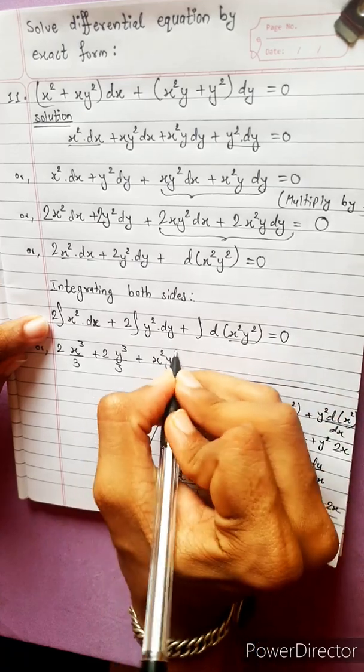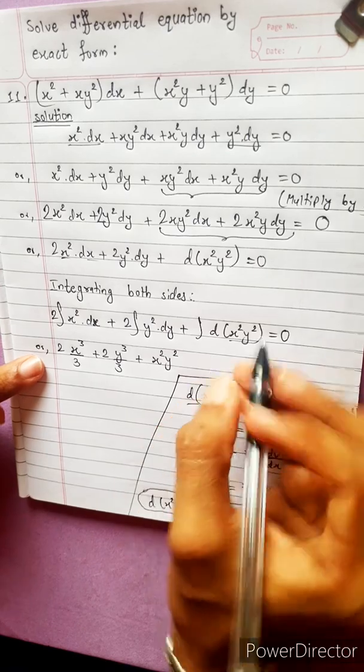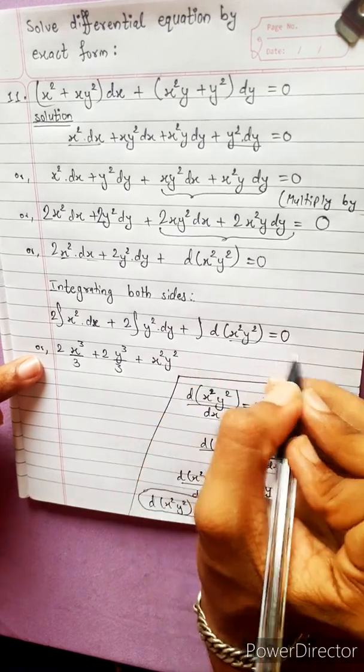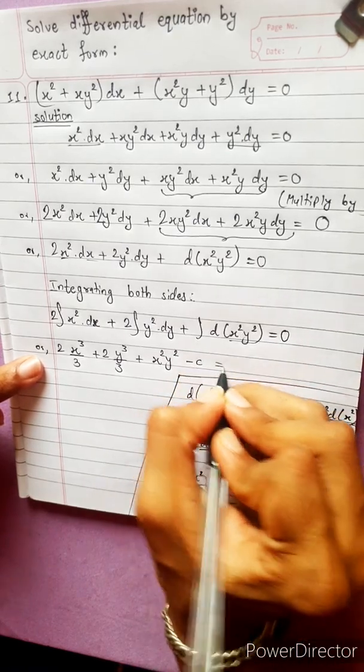x squared y squared, integration constant equals 0.